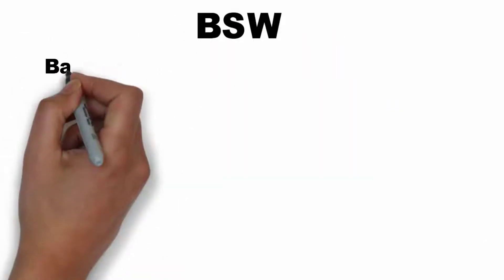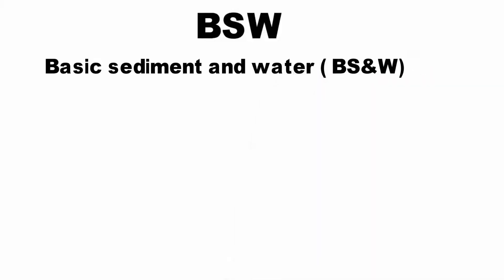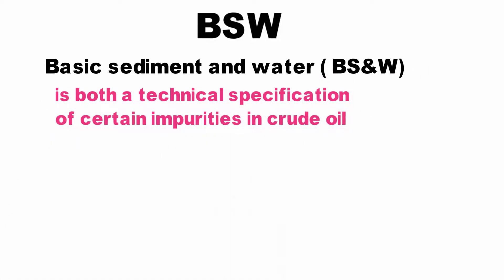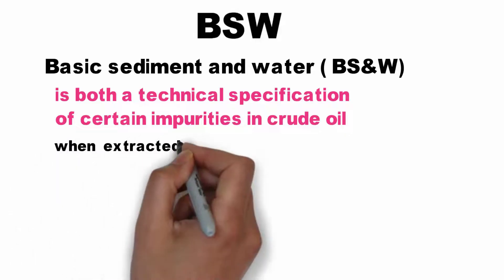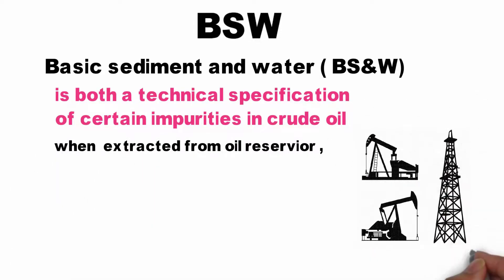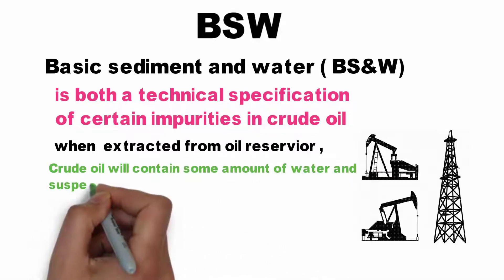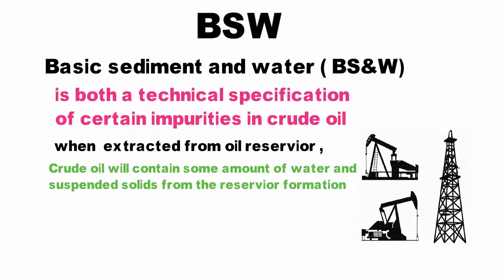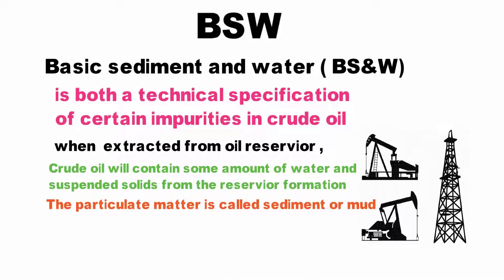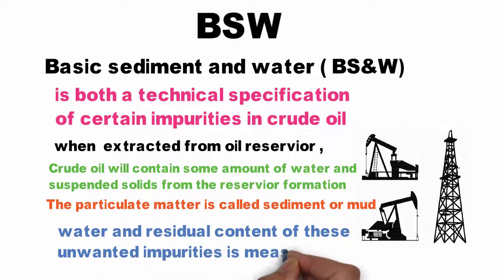Basic Sediment and Water is both a technical specification of certain impurities in a crude oil. When extracted from an oil reservoir, the crude oil will contain some amount of water and suspended solids from the reservoir formation. The particulate matter is called sediment or mud. The water and residual content of these unwanted impurities is measured as BSW.